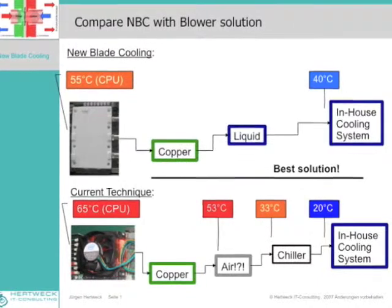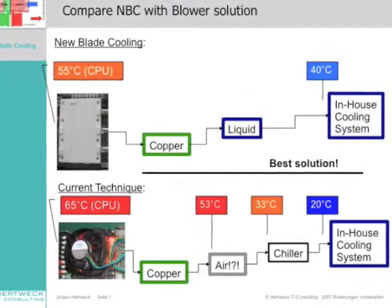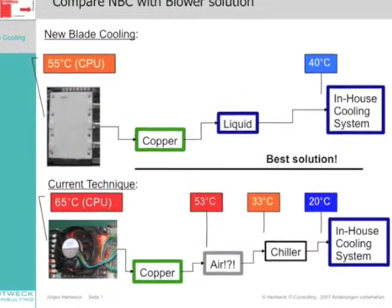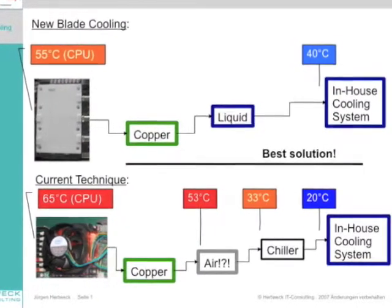Or, in another example, in case the NBC is supplied with a temperature of 40 degrees Celsius, the CPU only gets up to 55 degrees Celsius, which means less operative expense in the data center.